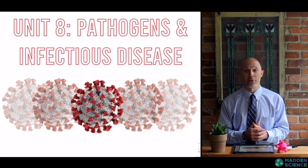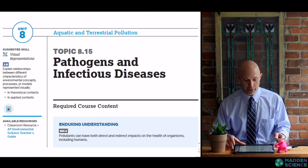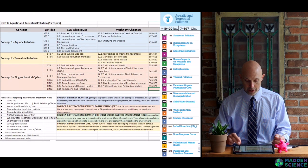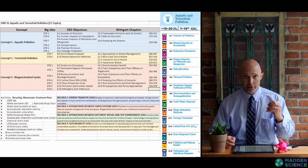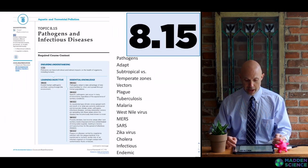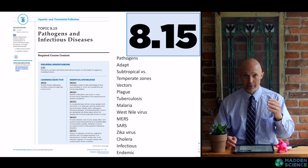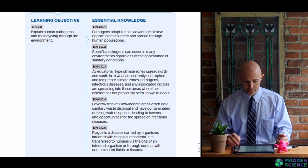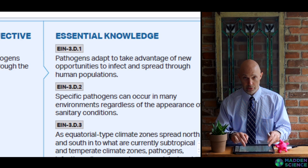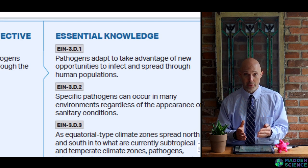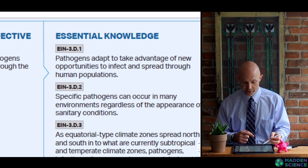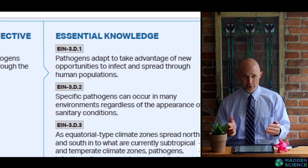Within our APES curriculum, this is section 8.15, at the very bottom of unit 8. You can see some of our key vocabulary — we're going to touch each and every one of these. Keep in mind you can pause, screenshot, rewind, and come back. We'll cover the ability of pathogens to adapt, talking about the evolution of different pathogens: viruses, bacteria, and parasites.